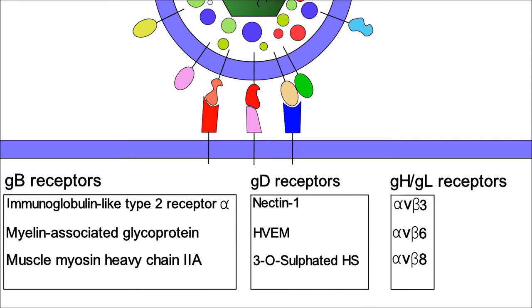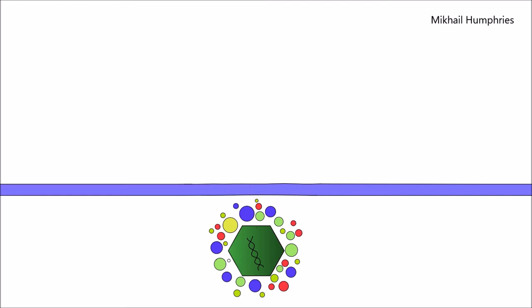Viral ligand Gb, Gd, and heterodimer GH-GL bind to receptors shown in the animation. After ligand receptor binding, the virus fuses with the plasma membrane and releases the capsid into the cytoplasm.